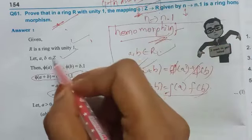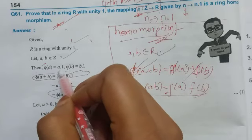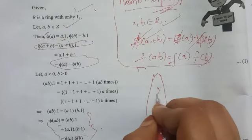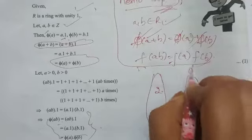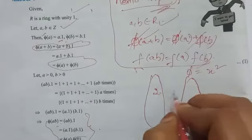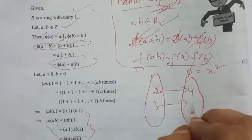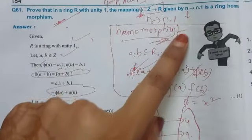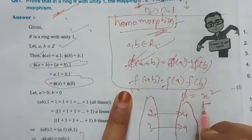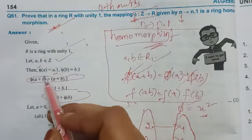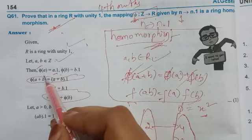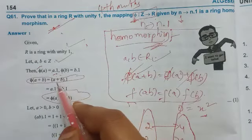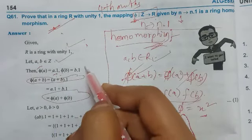In the same way, we will take a in Z and map it to a.1. This is basically the domain and codomain. The image will show us — for example, if we take 2, phi of 2 gives 2 squared value is 4; 3 gives 3 squared value is 9. So this is the domain and codomain. In the same way, phi of a maps to a.1 and phi of b maps to b.1.